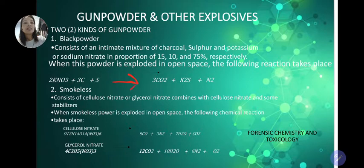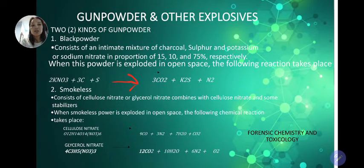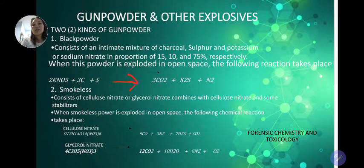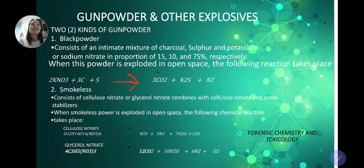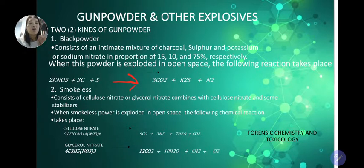For smokeless powder, it consists of cellulose nitrate or glycerol nitrate combined with cellulose nitrate and some stabilizers. When this powder explodes in open space, the cellulose nitrate decomposes into carbon monoxide, nitrogen gas, water, and carbon dioxide. The glycerol nitrate decomposes into carbon dioxide, water, nitrogen gas, and oxygen gas.